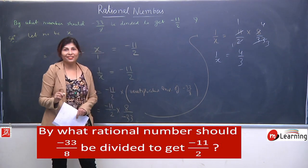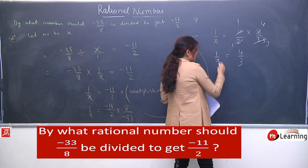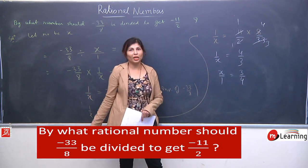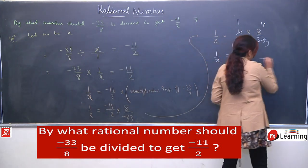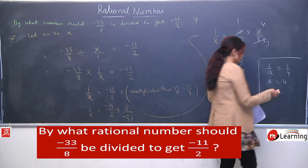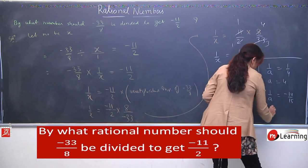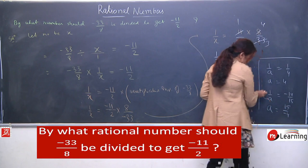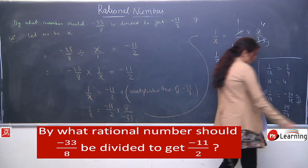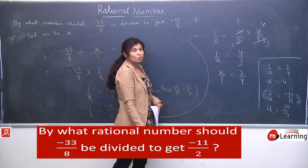Abhi bhi hum ne x find nahi kiya — what we have found is 1 by x, and our requirement is x. Toh hum isko kya karenge? Reciprocate kar denge. Jab hum left hand ko reciprocate karenge, toh mathematics rule ke anusar right hand ko bhi reciprocate karna hoga. For example: if 1 by a equals to 1 by 4, then a equals to 4. Another example: 1 by a equals to minus 14 by 15, so a will be 15 by minus 14 — numerator aur denominator exchange hote hain. Toh same pattern mein: 1 by x equals to 4 by 3 hai — toh hum ne isko reciprocate kar diya — so x equals to 3 by 4.